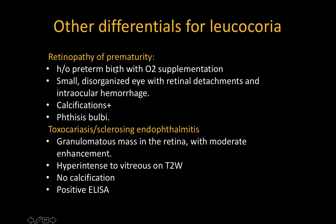Other differentials for leukocoria include retinopathy of prematurity — usually with history of preterm birth with oxygen supplementation — characterized by a small disorganized eye with retinal detachments and intraocular hemorrhage; calcification may be present and long-standing cases result in phthisis bulbi. Other differentials include toxocariasis and sclerosing endophthalmitis, where all layers of the globe will be involved and show enhancement with an associated granulomatous mass in the retina, though these are difficult to differentiate on imaging alone.